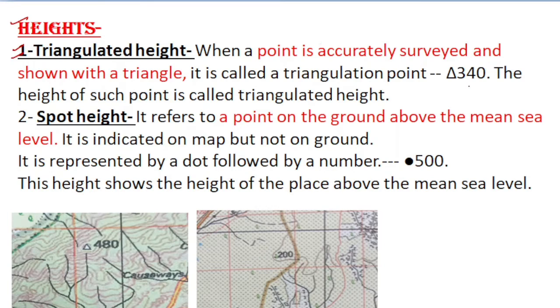Triangulated height is depicted on the map with a triangle and numerical data. When a point is accurately surveyed and shown with a triangle, it is called a triangulation point, and the height of such point is referred to as triangulated height.